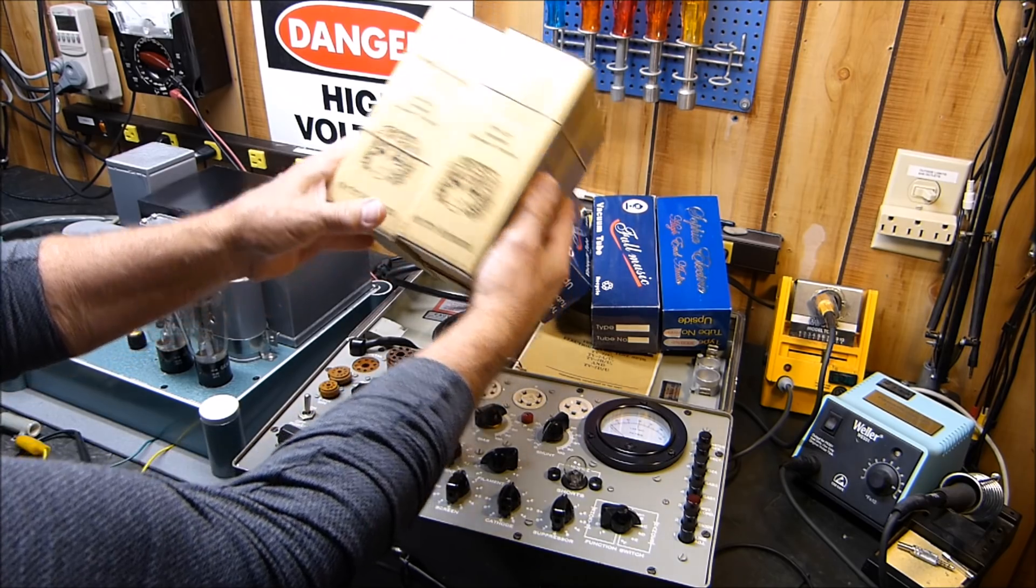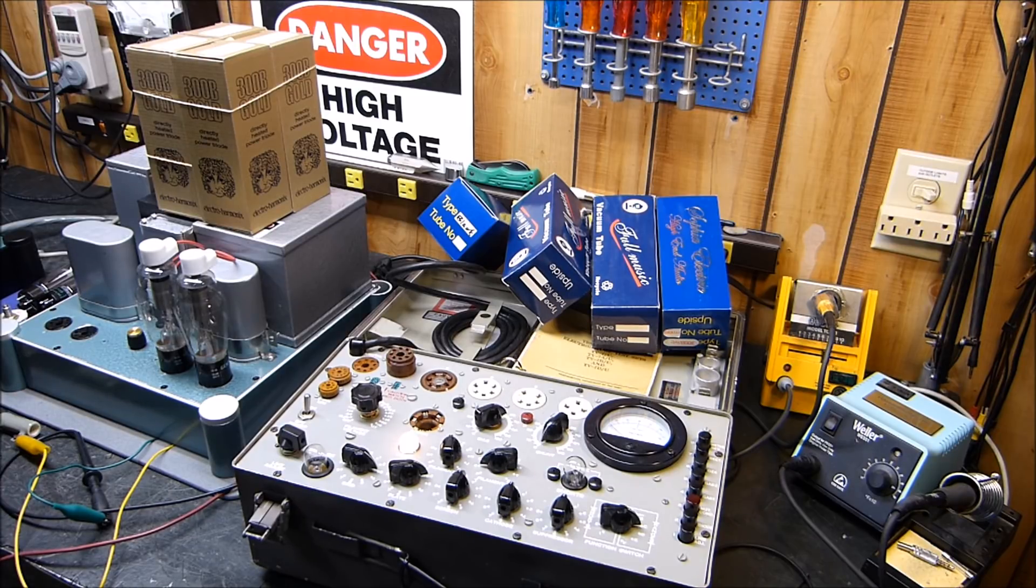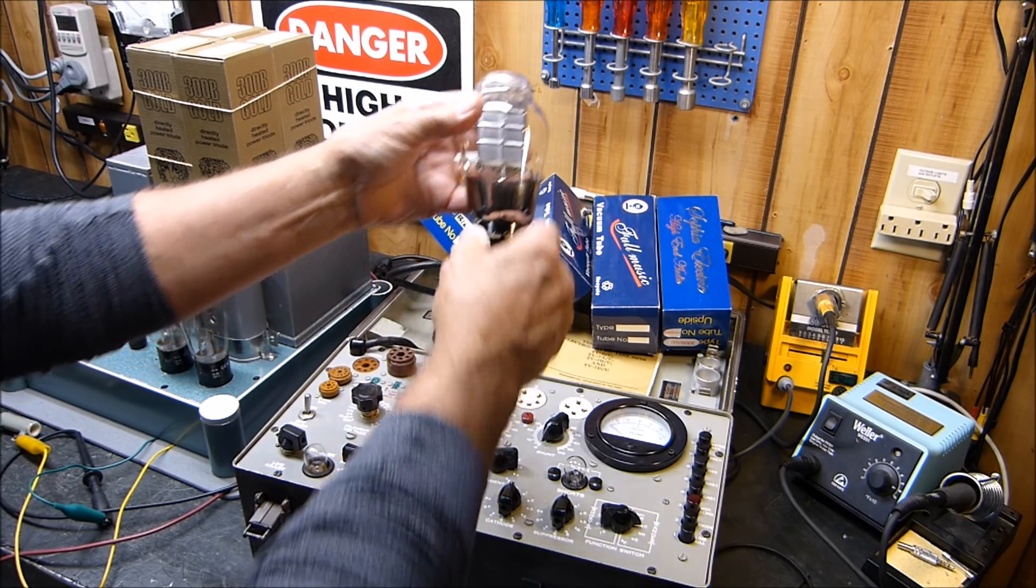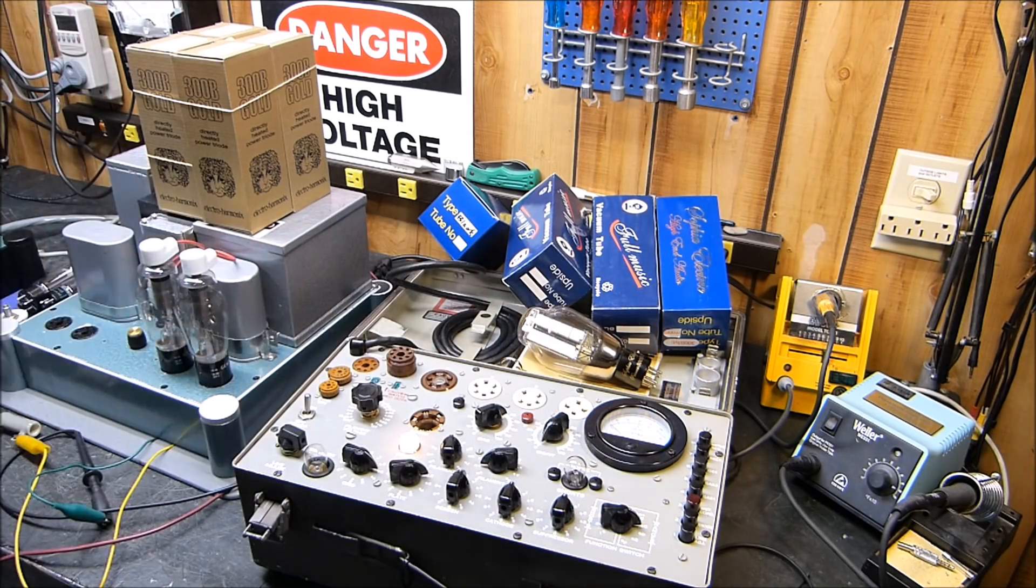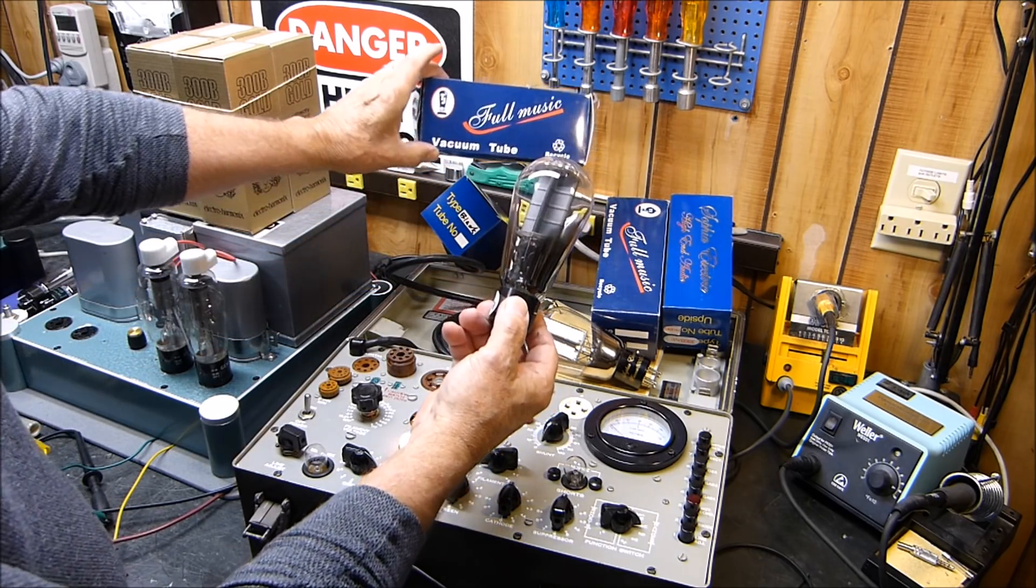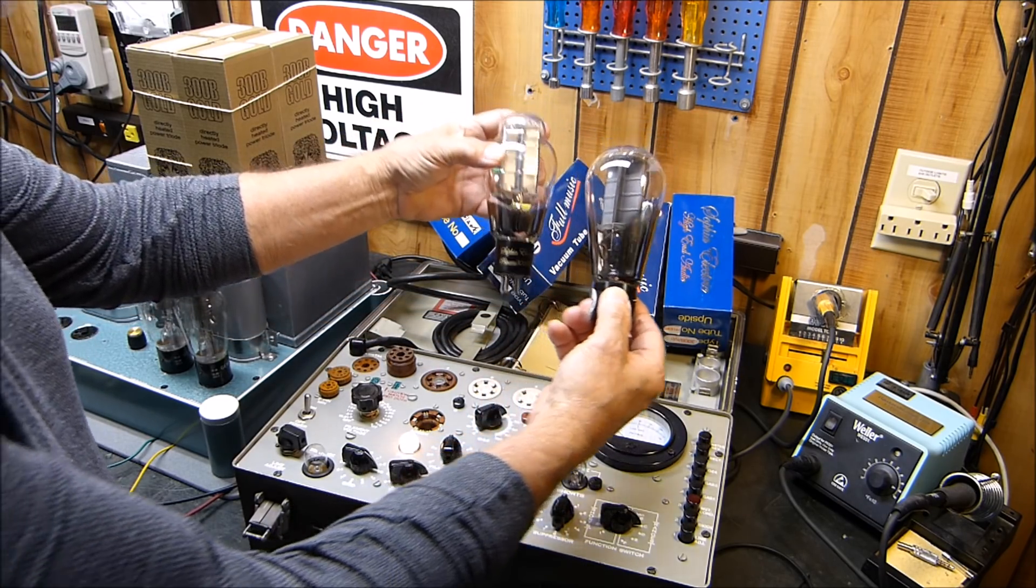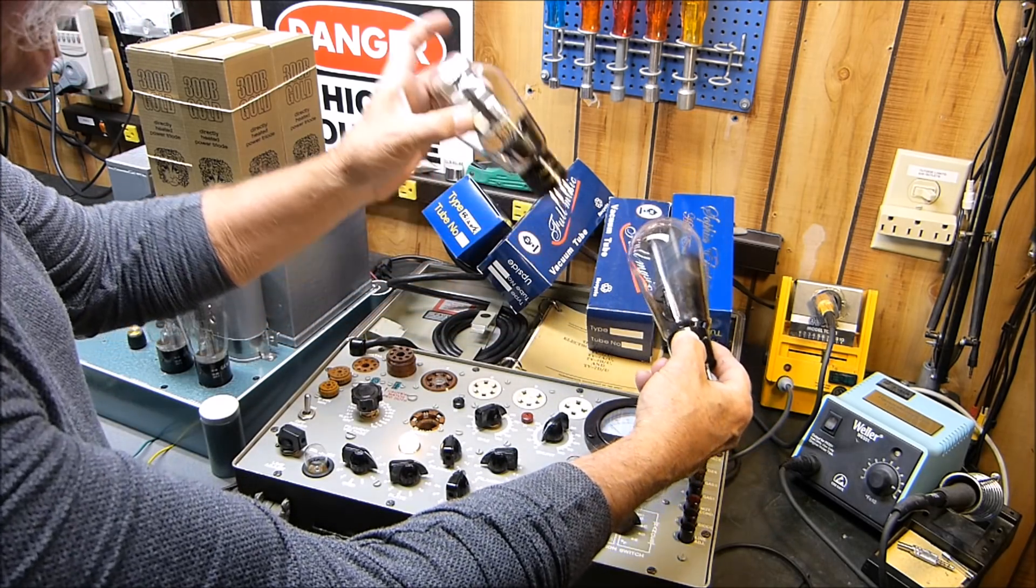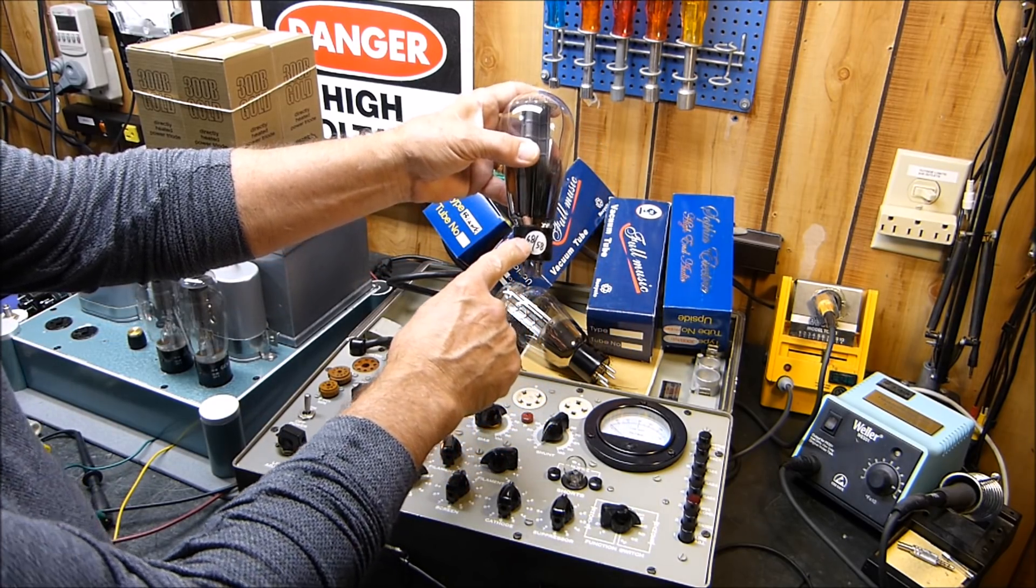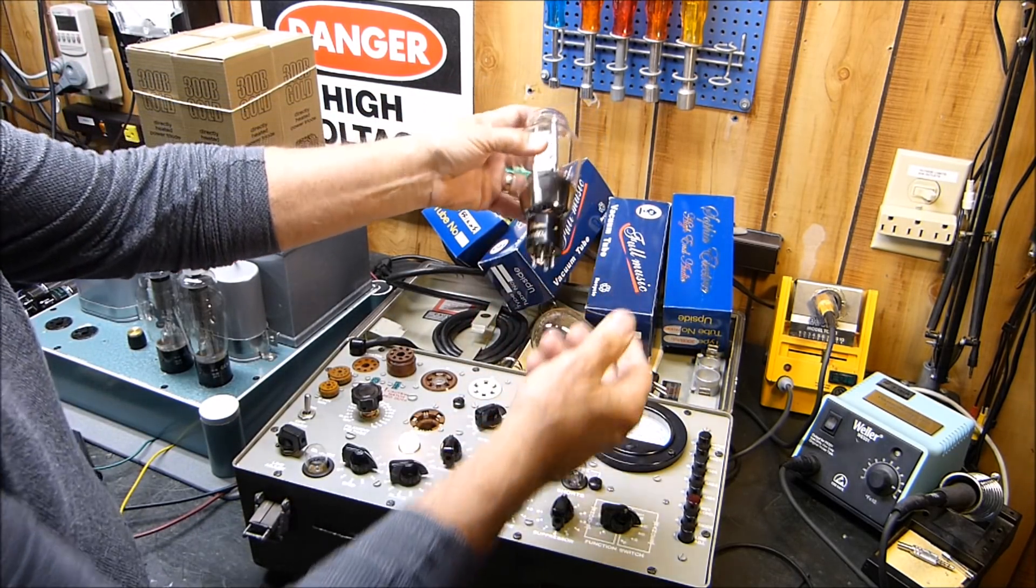If you've been watching any of my videos on 300B amplifiers that I'm building, this is the Sophia Electric. This one tests good. Treat these guys gentle. And this one is the one called Full Music, and it tests good. These are the ones I've been using. The other two that I have test really bad. Last time I tested this one, it tested 68 for the minimum of 58. This one tested... oh darn, it's already falling off.